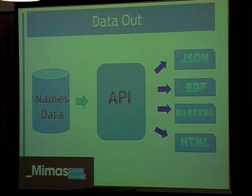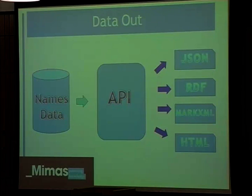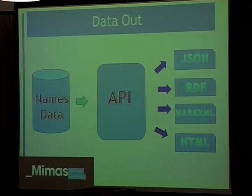Once we built a central records store we put an API on top of it — a RESTful API — which could be used to query the data in a number of different ways and bring it back in a number of different formats like JSON, RDF, MARC XML, and plain HTML.